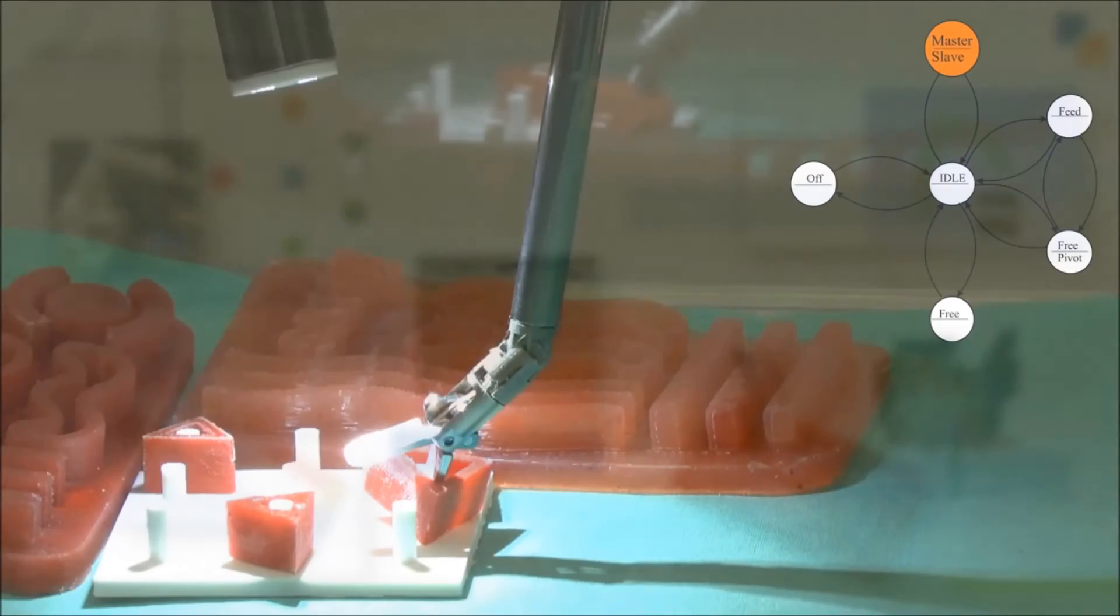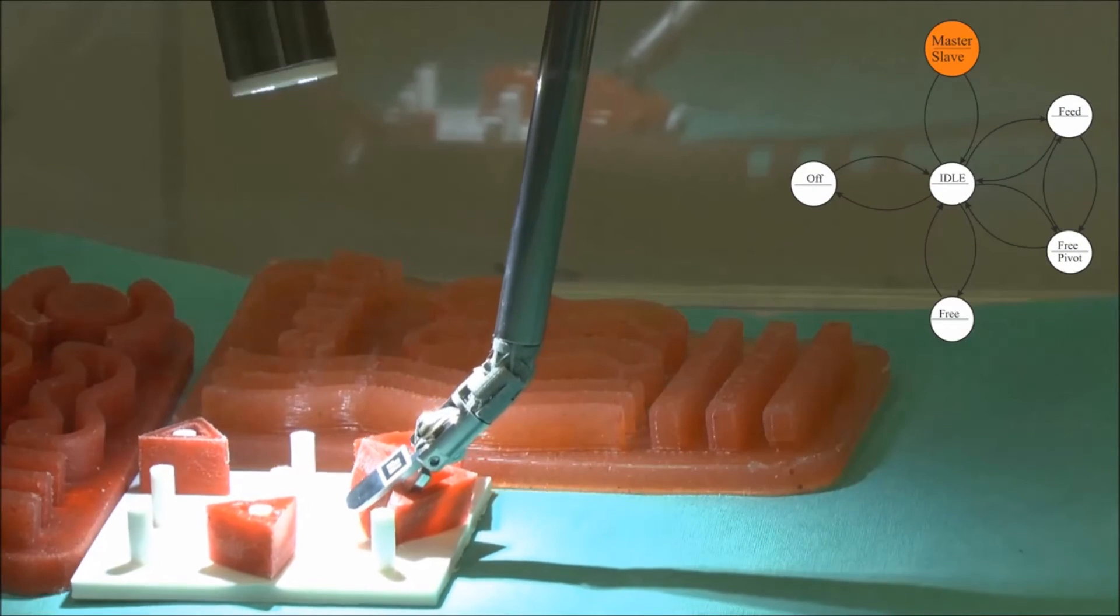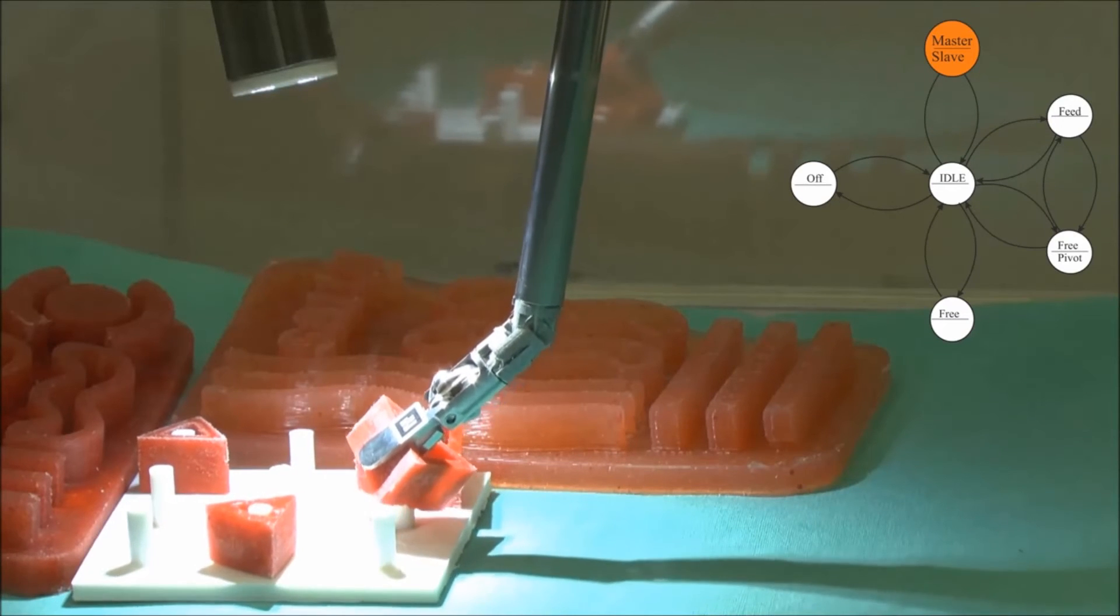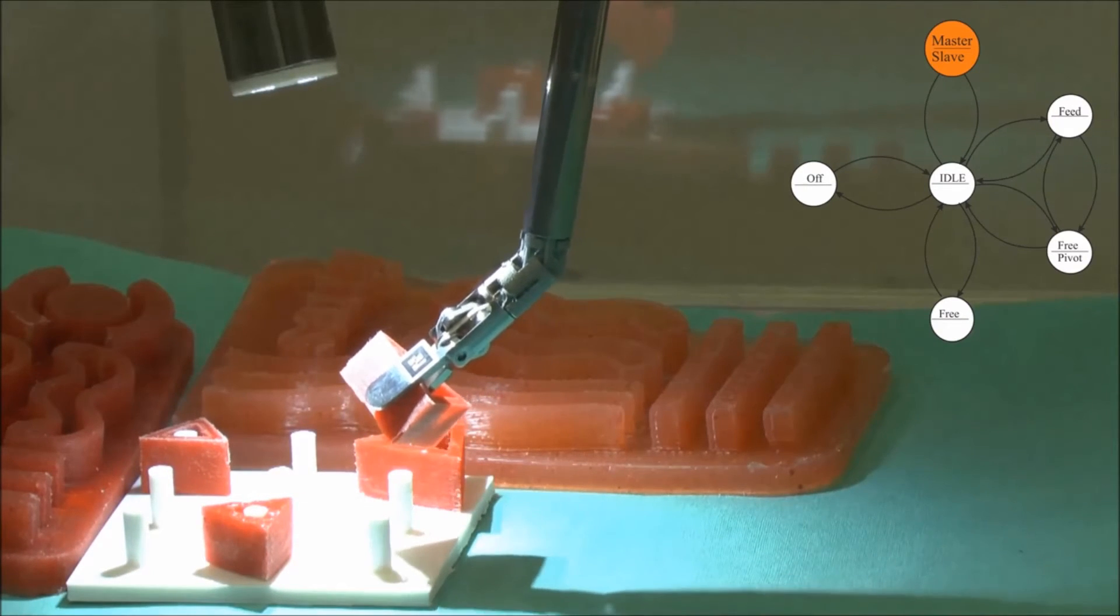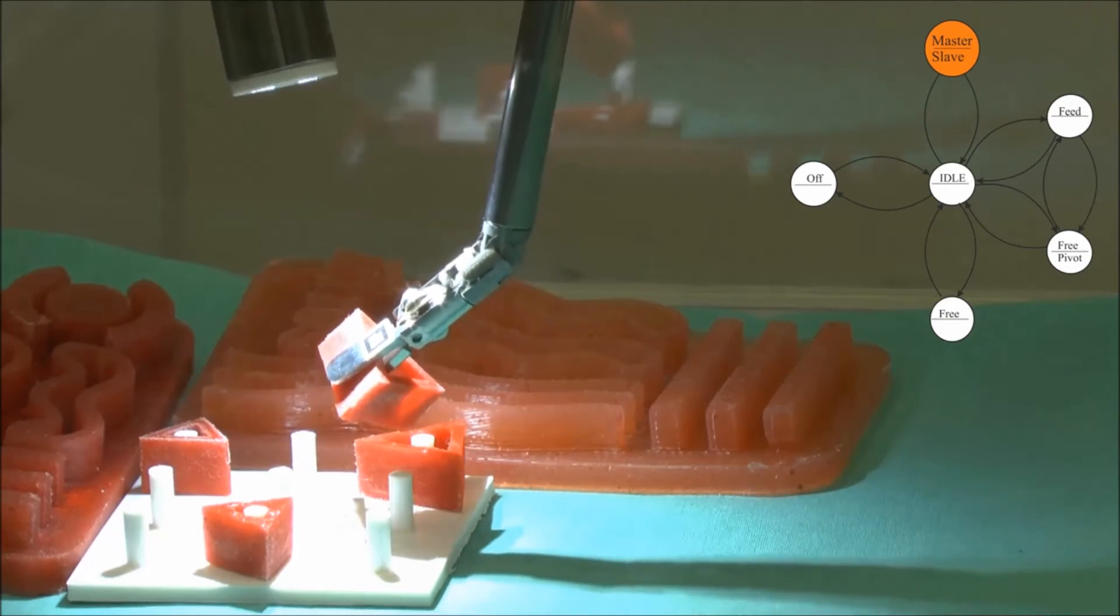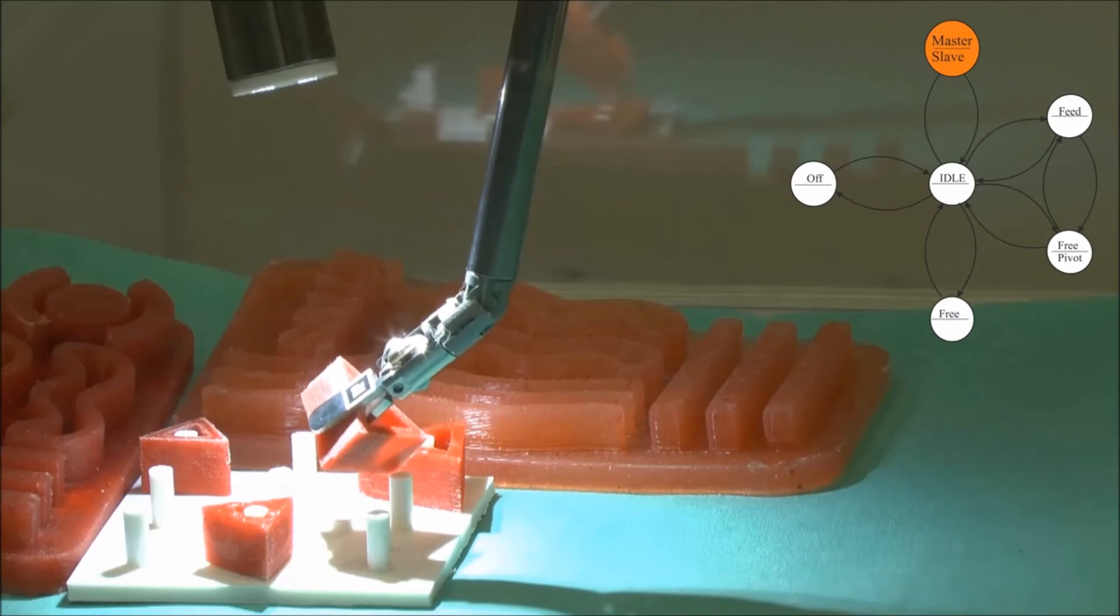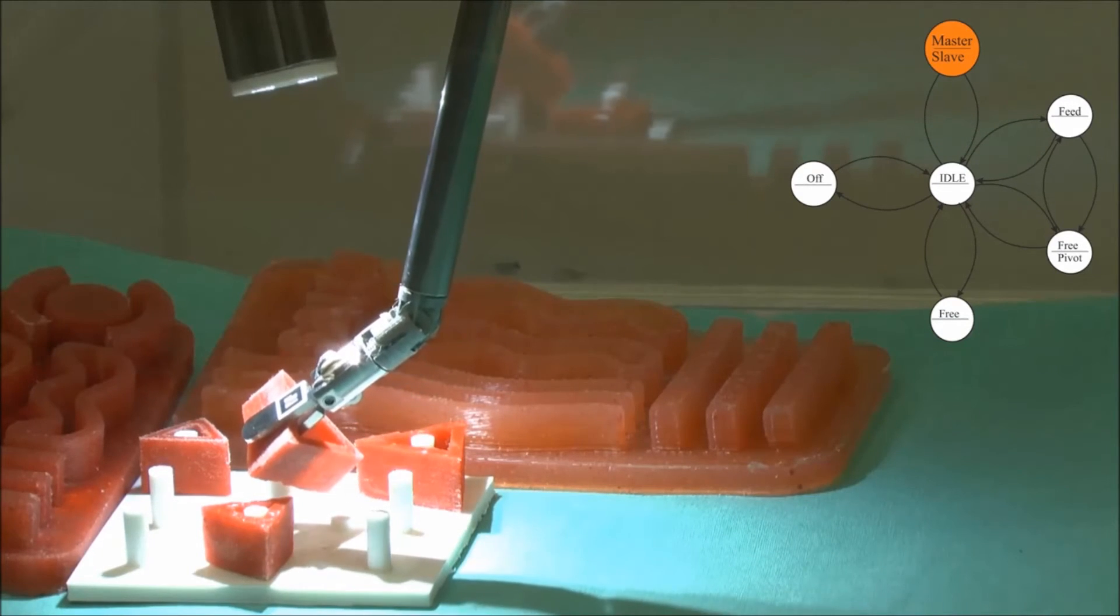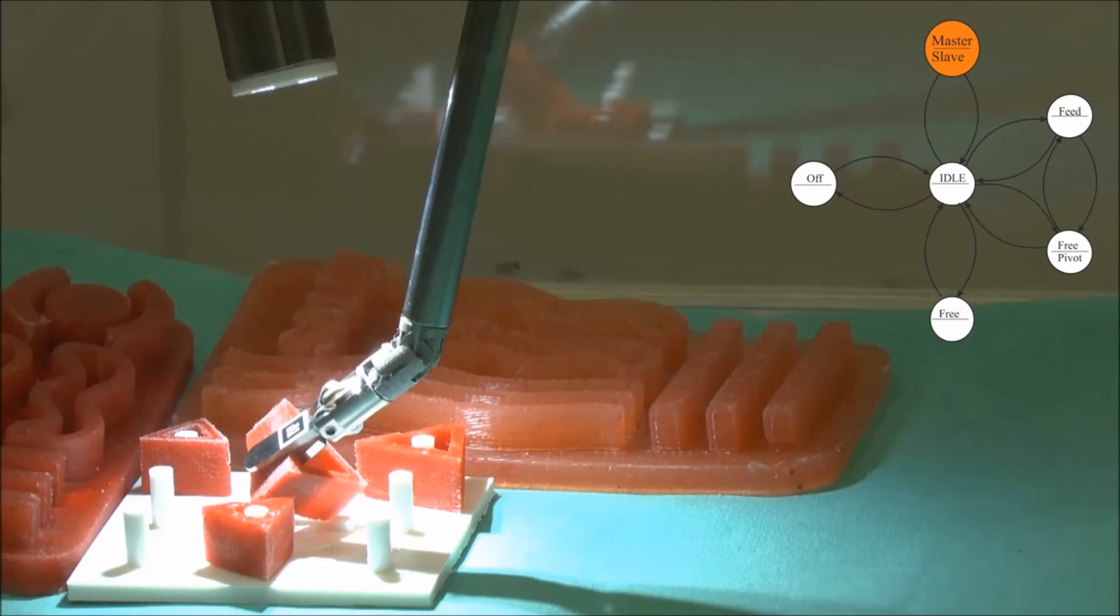Our testbed is used to demonstrate a manipulation task. The master-slave control mode is used to telemanipulate the instrument tip with a Space Navigator as input device. At the top, our custom-made stereo endoscope is visible, providing illumination and capturing the operation field.